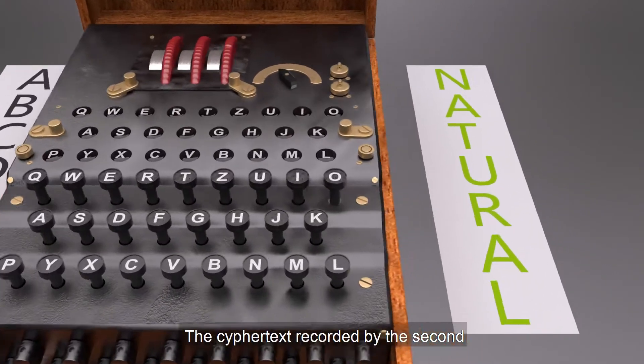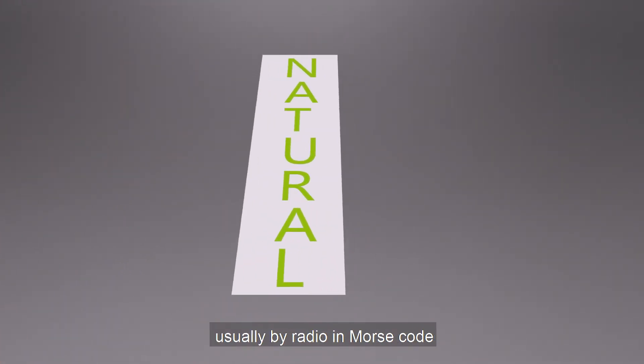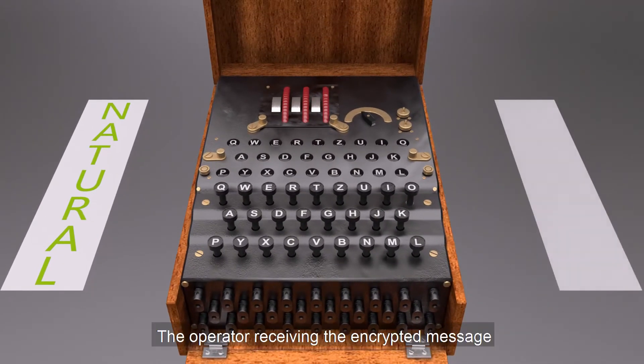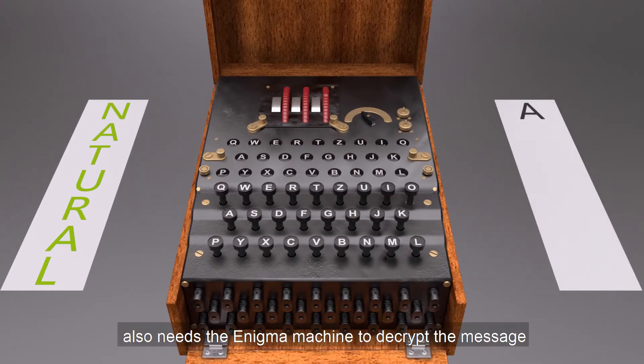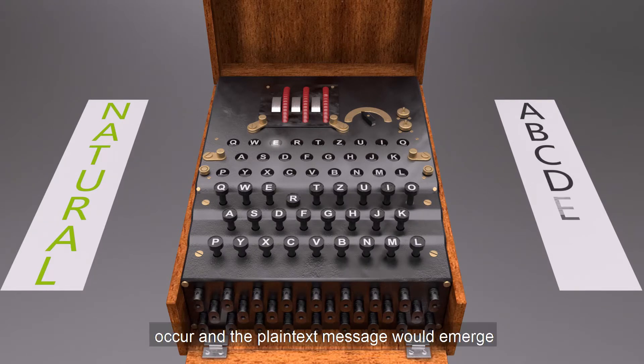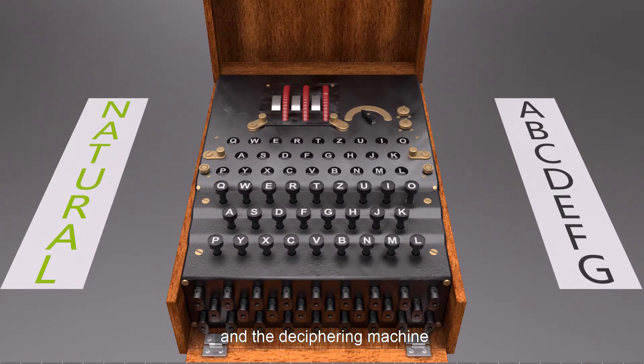The ciphertext recorded by the second operator would then be transmitted, usually by radio in Morse code, to an operator of another Enigma machine. The operator receiving the encrypted message also needs the Enigma machine to decrypt the message. The operator would type in the ciphertext, the reverse substitution would occur and the plain text message would emerge, as long as all the settings are identical between the enciphering machine and the deciphering machine.